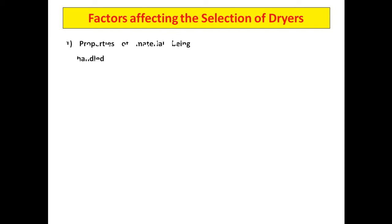Let us discuss different factors which affect the selection of dryers. If you work in a pharmaceutical industry and need to select a type of dryer for drying a particular material, the first factor is properties of the material being handled — specifically, the physical characteristics of the material when it is dry: whether it is sticky, amorphous, crystalline, or otherwise.